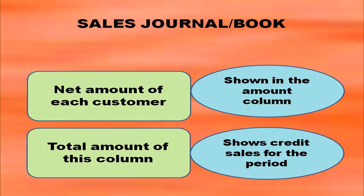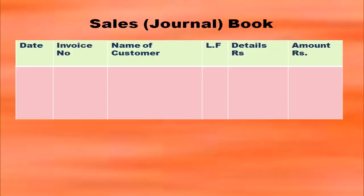The total amount of the amount column shows credit sales for the period. Here is the format of the sales book with columns: date, invoice number, name of the customer, ledger folio, details, and amount.